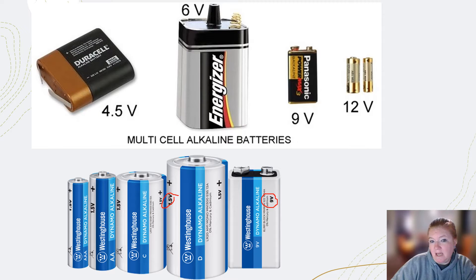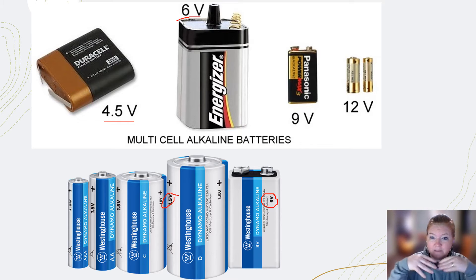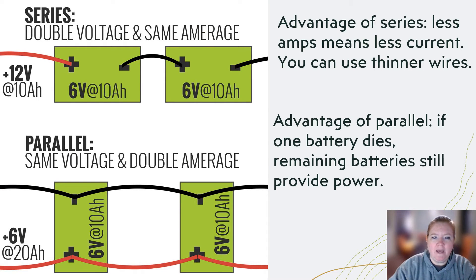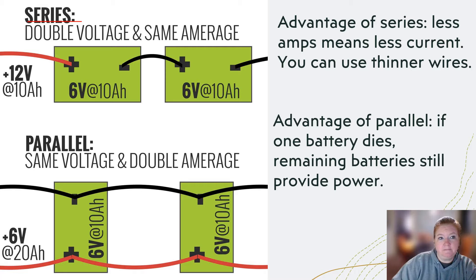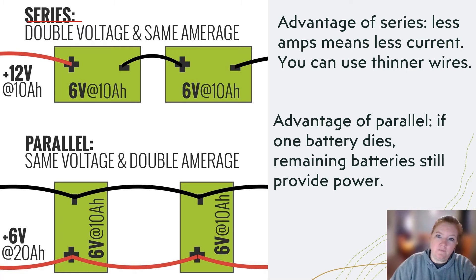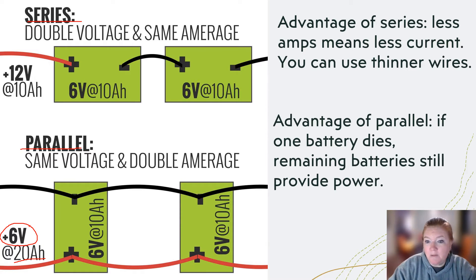We also have the 9-volt battery, which is a multiple of 1.5. That means those batteries were connected in a series. When you connect batteries in series, the voltage increases. We can use thinner wires because the amps don't change, just the voltage. In parallel, the voltage stays low but the amps increase — and if one battery in the parallel circuit dies, all the others still work.